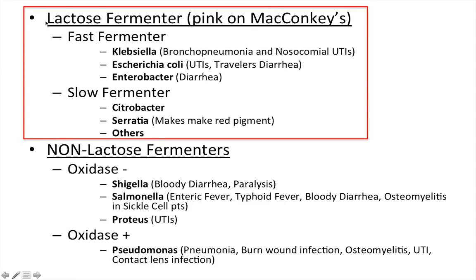This is a big chart that kind of organizes the gram-negative rods. At the beginning of the lecture I mentioned that there are lactose fermenters — that's this category here — and then there are the non-lactose fermenters. This video is going to be all about the lactose fermenters. One thing I want to point out is that lactose fermenters turn pink on McConkey's agar. This is something that occasionally comes up on the exams, and you definitely want to know that.